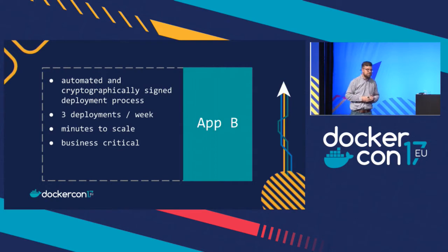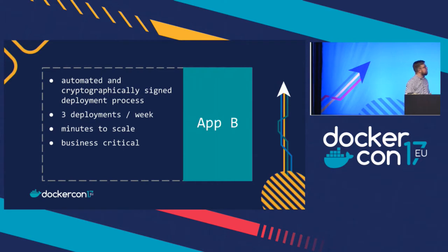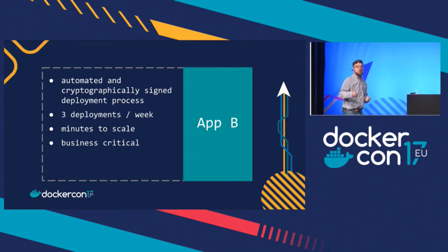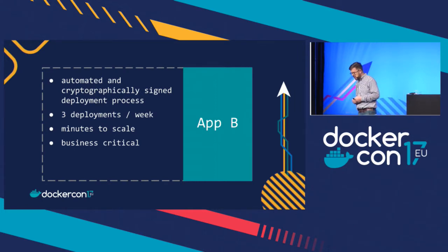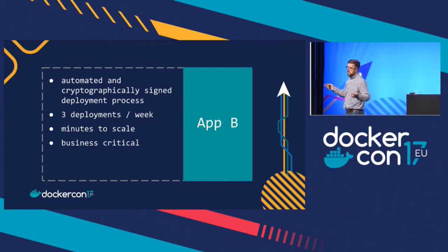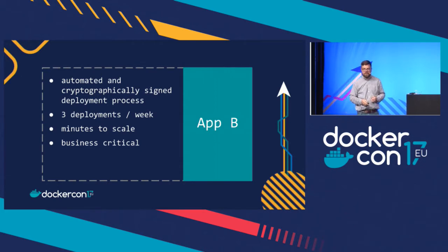Now let's imagine App B. Application B is automated — it has an automated deployment process, so it's very consistent. It's also cryptographically signed, so we know it's going to be the exact same image that was built by our CI system. In this case, we're doing three deployments a week, which is much faster to the pace of our developers. This takes minutes to scale using cloud infrastructure and Docker scaling capability. And this app is also business-critical.